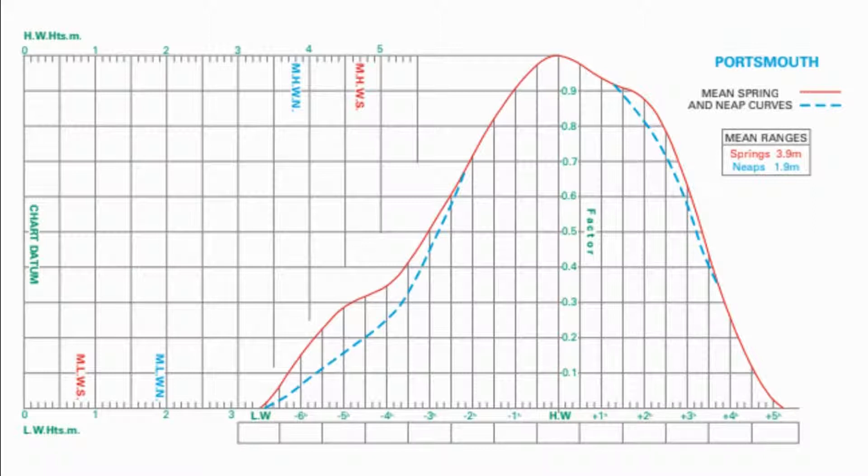If you think back to our tidal curve then we need three pieces of information in order to be able to fill it out. We need a high water height in metres for the top scale, a low water height in metres for the bottom scale and a high water time for the boxes at the bottom of the curve.